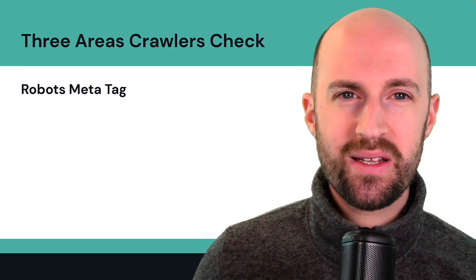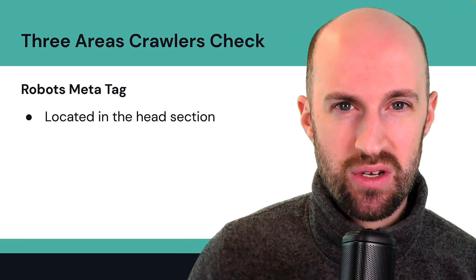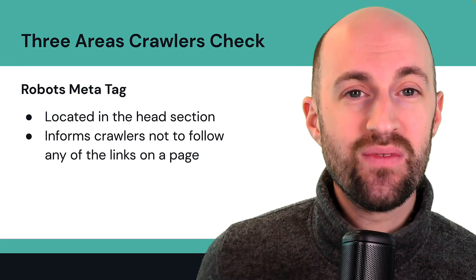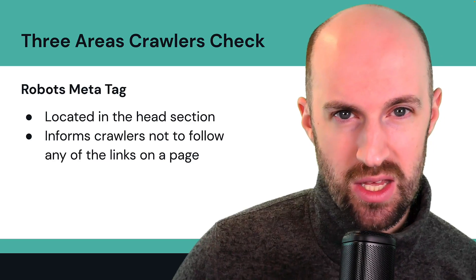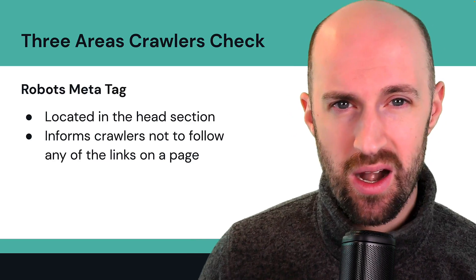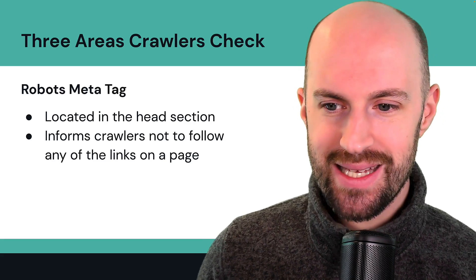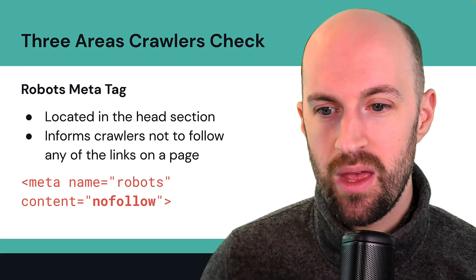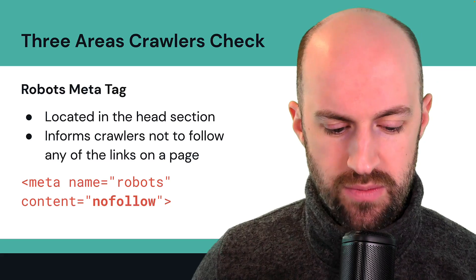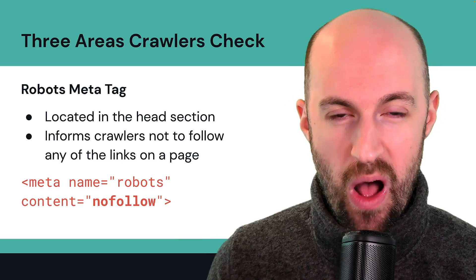The second area is the robots meta tag. This is located in the head section of an HTML page and informs crawlers not to follow any of the links on that page. So if you have a page and you don't want crawlers to follow any of the links there, you specify that in the robots meta tag. It looks like this: meta name equals robots, content equals nofollow. The nofollow directive basically says don't follow any of the links on this page.